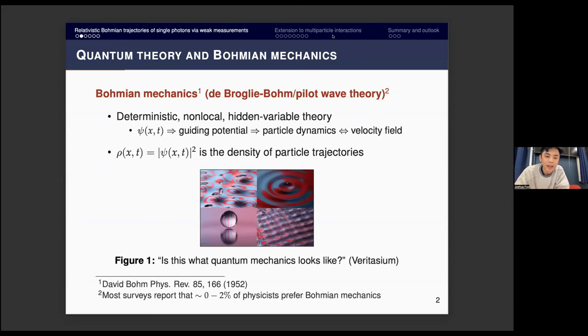Bohmian mechanics, as you may be aware, is a deterministic, non-local, hidden variable interpretation of quantum mechanics, otherwise known as pilot wave theory. According to most surveys, 0% to 2% of physicists prefer this interpretation, which makes roughly 0% to 1.2% people in this Zoom meeting. Now we have the wave function interpreted as sourcing some guiding potential, which governs the particle dynamics, and from that, we can obtain some deterministic classical velocity field, which the particles follow.